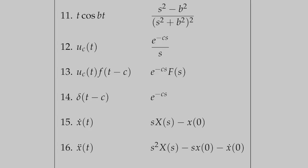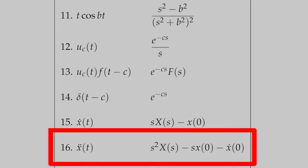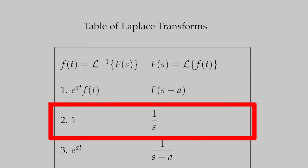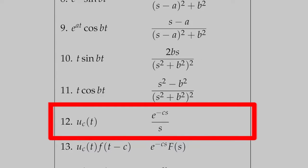We're taking the Laplace transform of x double dot, using line 16. Since x of 0 and x dot of 0 are both 0, we obtain s squared times capital X. Plus 3 times the Laplace transform of x dot — that gives plus 3 times s times capital X from line 15, again with x of 0 equals 0. Plus 2 times the Laplace transform of x. That equals the Laplace transform of 1, from line 2, which is 1 over s. Minus the Laplace transform of u sub 1 of t, from line 12 with c equals 1, giving e to the minus s divided by s.